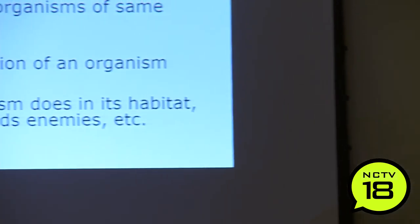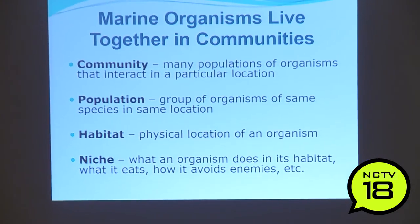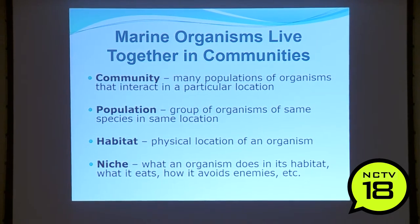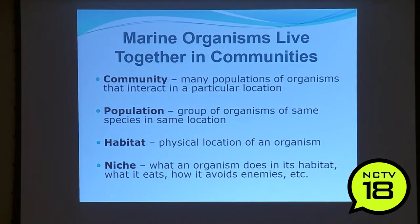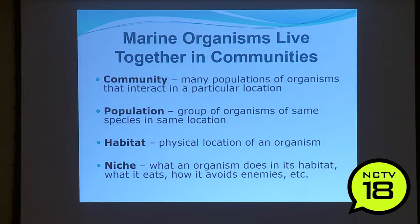Marine organisms live in communities — many populations of organisms interacting in a particular location. A population is a group of organisms of the exact same species, like a population of herring. A habitat is where everything lives and is probably the most important thing to conserve when protecting populations. A niche is what an organism does in its habitat — what it eats, how it avoids enemies. When somebody moves in, it can be invasive, pushing out other creatures, like the red-eared slider overtaking a painted turtle's niche.